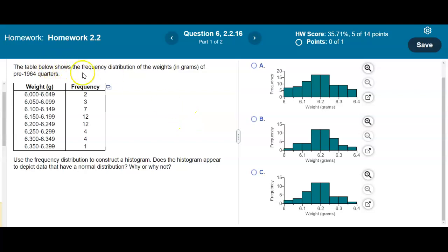The table below shows the frequency distribution of weights in grams of pre-1964 quarters. We have our weight in classes and our frequency. We want to use the frequency distribution to construct a histogram and determine if the histogram appears to depict data that have a normal distribution, yes or no.